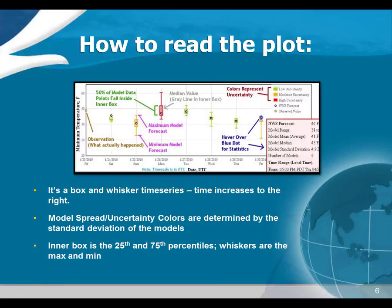Moving to the right you'll see different colors for the different box and whisker plots. Those colors represent the standard deviation of the set of models that go into each point. The lower the standard deviation the more likely you are to see a green color, and if there is a lot of spread in the sample you'll see more red. I arbitrarily chose thresholds for each field based on trial and error, but these thresholds seem to work pretty well.